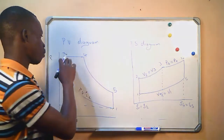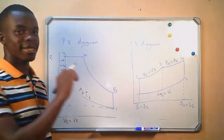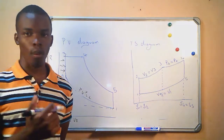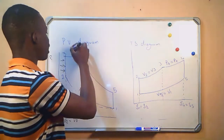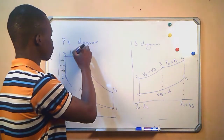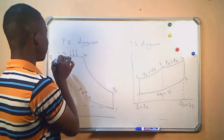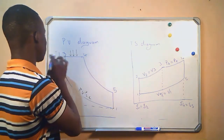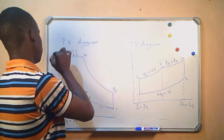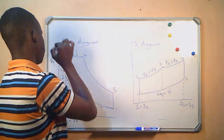And then from 3 to 4, that is the second phase of combustion. Heat is added and it takes place at constant pressure where P3 is equal to P4.